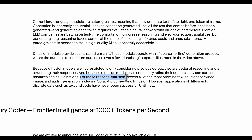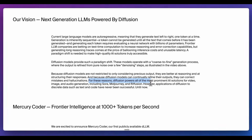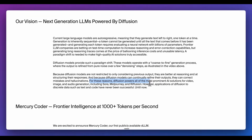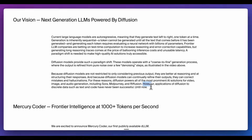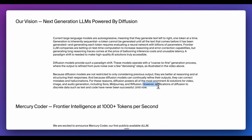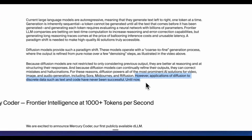For these reasons, diffusion powers all the most prominent AI solutions for video, image, and audio generation, including Sora, Midjourney, and Stable Diffusion. However, applications of diffusion to discrete data such as text and code have never been successful — until now.